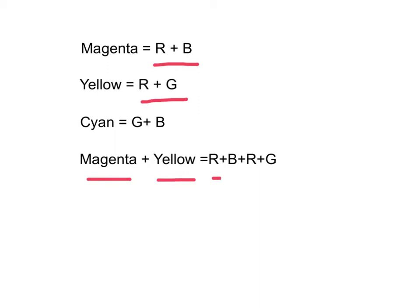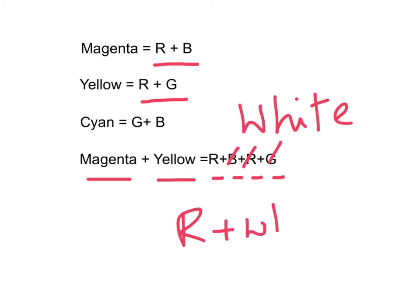it will equal to red plus blue plus red plus green. As the red, blue and green form the white color, eventually it will equal to red plus white, which is red.